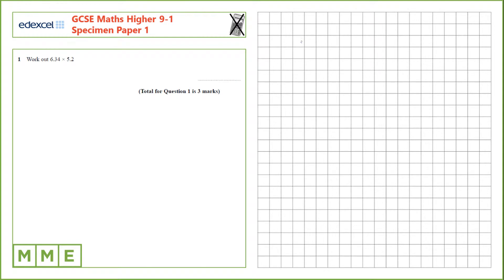Question 1. Work out 6.34 times 5.2. First let's rearrange this and we're going to call it 6.34 times 5.2. Make the calculation easy.